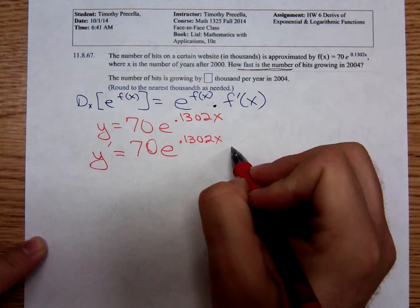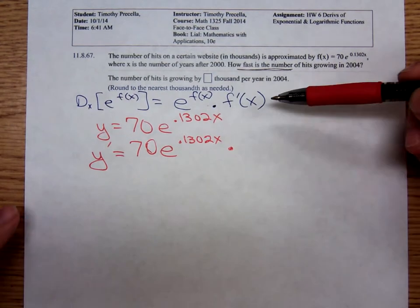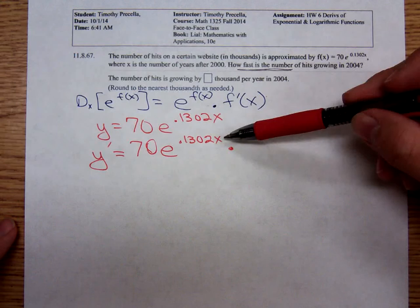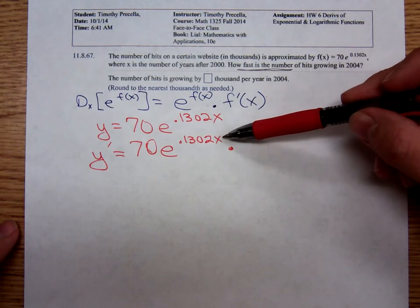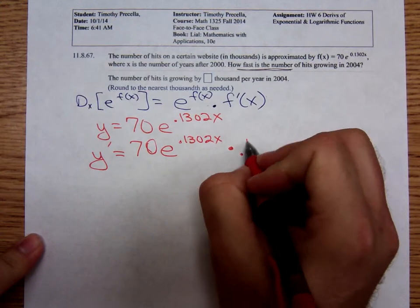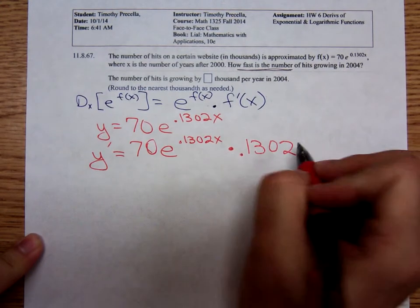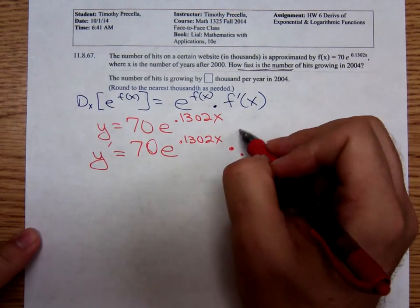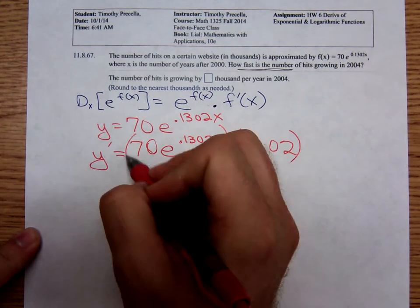We then have to multiply by the derivative of the exponent. The derivative of the exponent, the derivative of a number times x, is just that number, 0.1302. Maybe it would look better if I enclose that in parentheses.